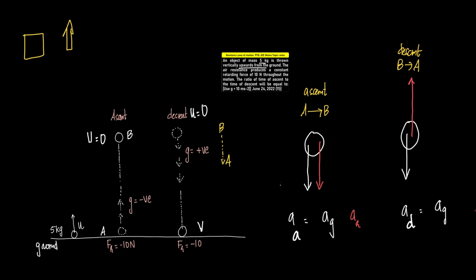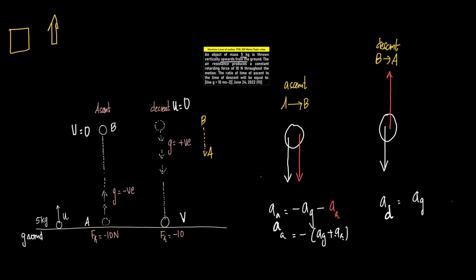It's better that we take these cases individually. During the ascent, the acceleration due to ascent will be equal to minus AG minus AR, which is equal to minus (AG + AR), where AR is the acceleration due to the resistive force, i.e., air resistance. During the descent, it would be acceleration due to gravity minus acceleration due to resistance. We'll use free body diagrams to understand the forces and reach the conclusion.